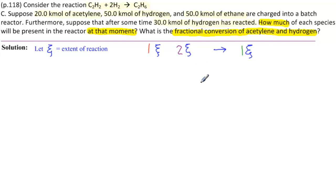And we're told that 30 kilomoles of hydrogen, which is the 2ξ here, has reacted. So we have H2 is 2ξ equal to 30 kilomoles, which implies that ξ is equal to 30 divided by 2 kilomoles, which would be 15 kilomoles.